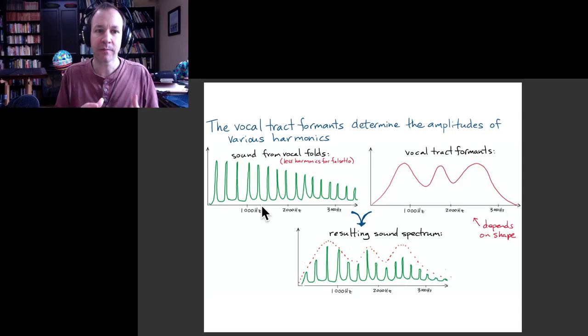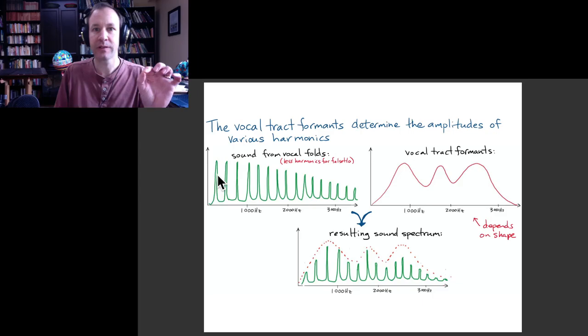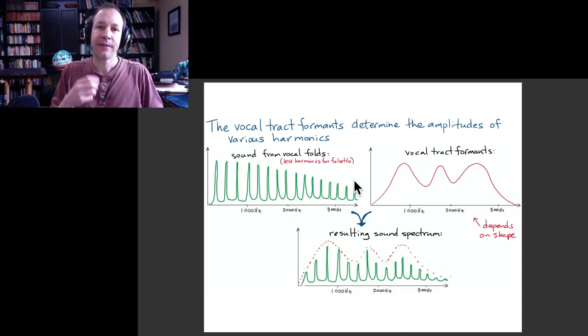So the first picture on the left here is the spectrum of sound from the vocal folds. It might look something like this: there'd be a fundamental frequency, and then all of the harmonic frequencies above that, multiples of that fundamental frequency. So this is falling off slowly.